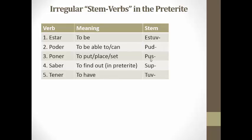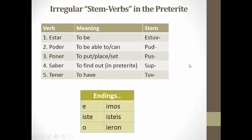Here's what's nice about these irregular stem verbs: once you get the irregular stem memorized, they all share this exact same set of endings. Notice, number one, there are no accents. And number two, these endings are kind of a mixture of the regular AR preterite endings and the regular ER/IR preterite endings. The yo form and the él/ella form are the same as AR, just without the accents. Everything else uses ER/IR preterite endings.